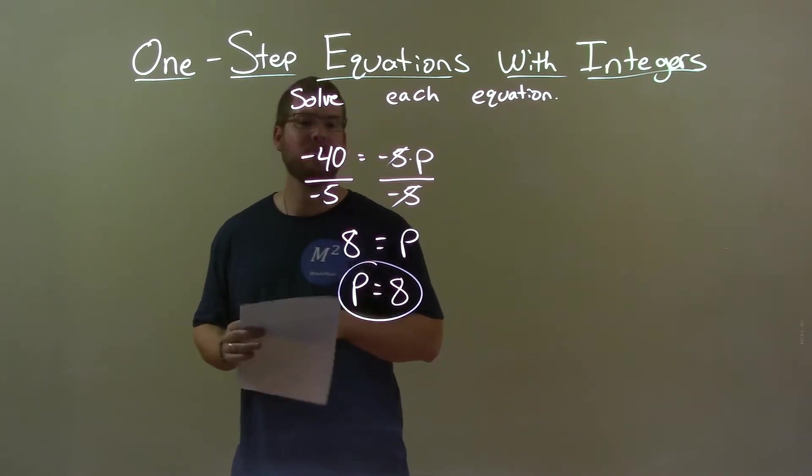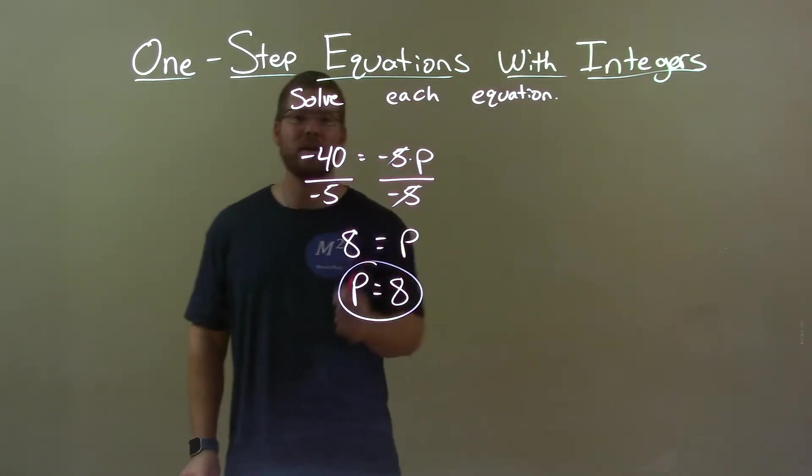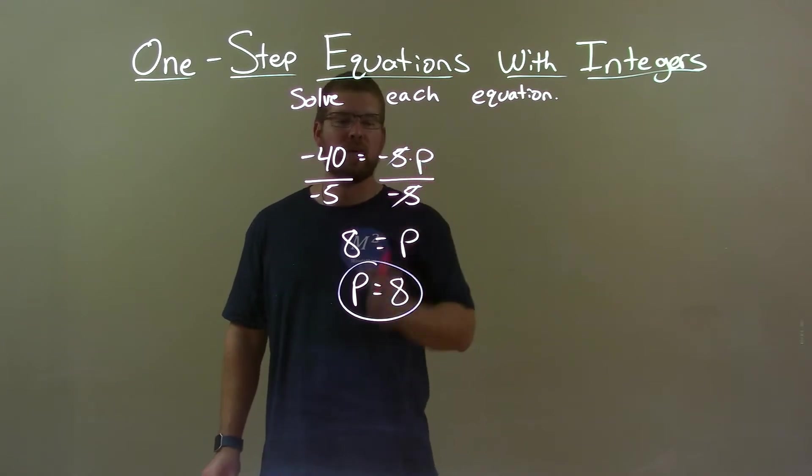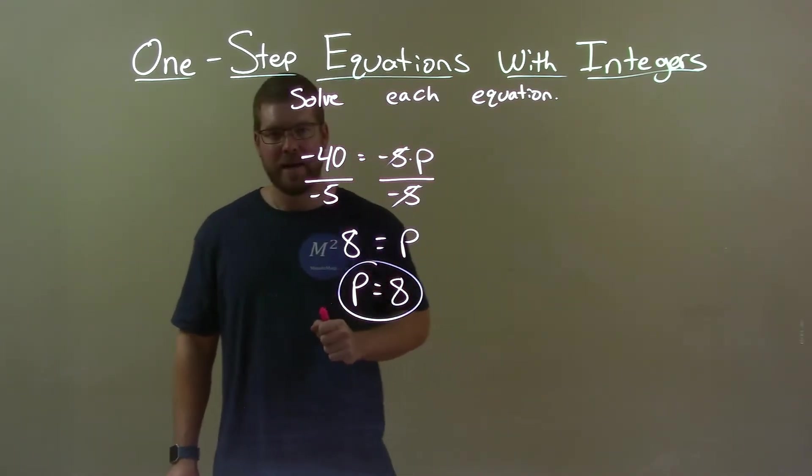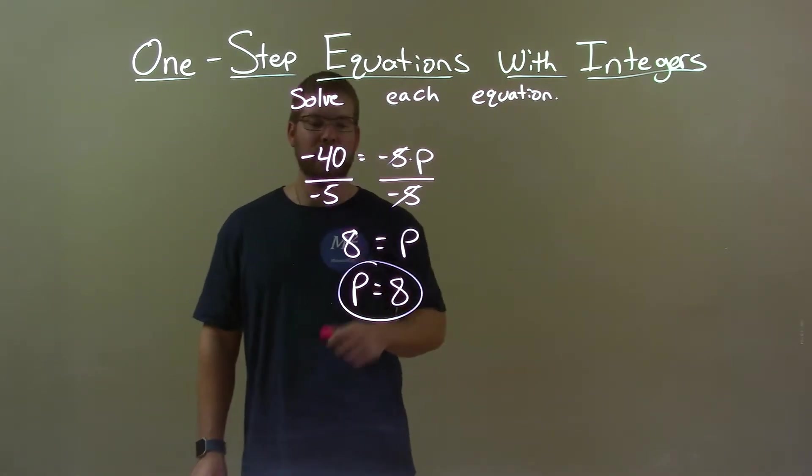Quick recap, we're given negative 40 equals negative 5 times p and we gotta solve for p. Divide both sides by negative 5. That got me p by itself. Negative 40 divided by negative 5 equals a positive 8. So again, final answer, p equals 8.